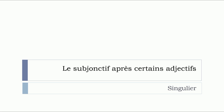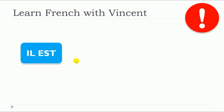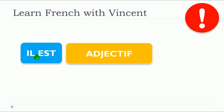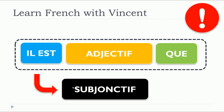In this lesson, we will see together le subjonctif après certains adjectifs, and more precisely with 'singulier'. The important thing to remember is that we will structure our sentence as follows: we start with 'il est' — remember that in this case 'il' stands for 'it' and not 'he' — then we put the adjective, then 'que', and after that we introduce the subjonctif. The verbs that come after this structure will be in the subjonctif.